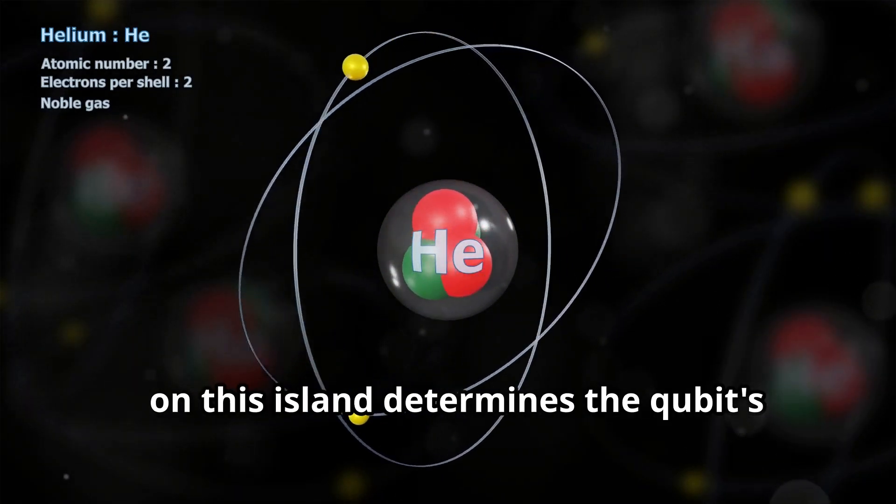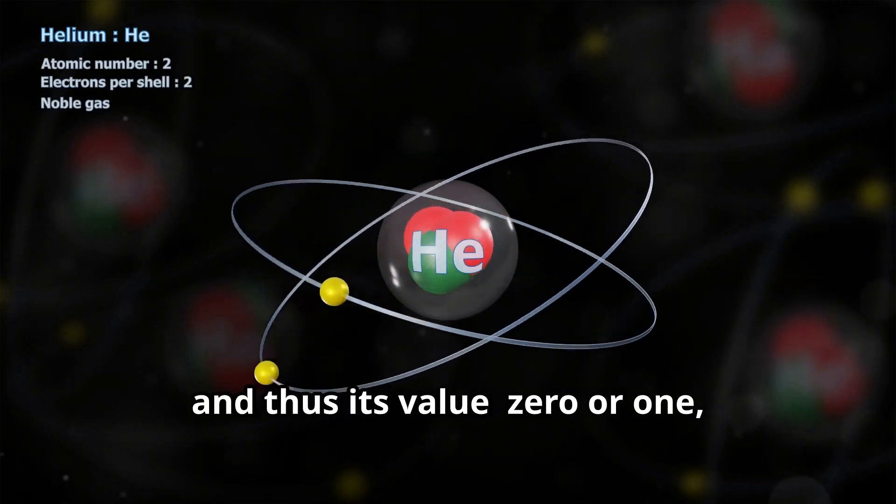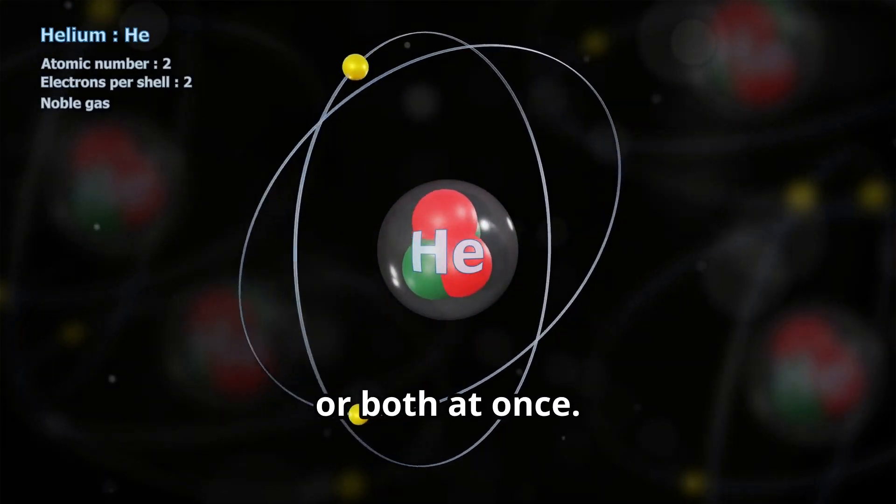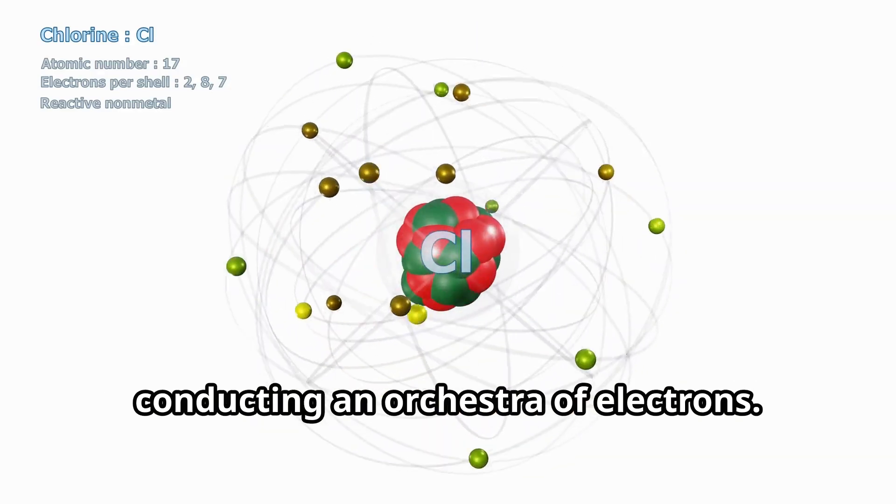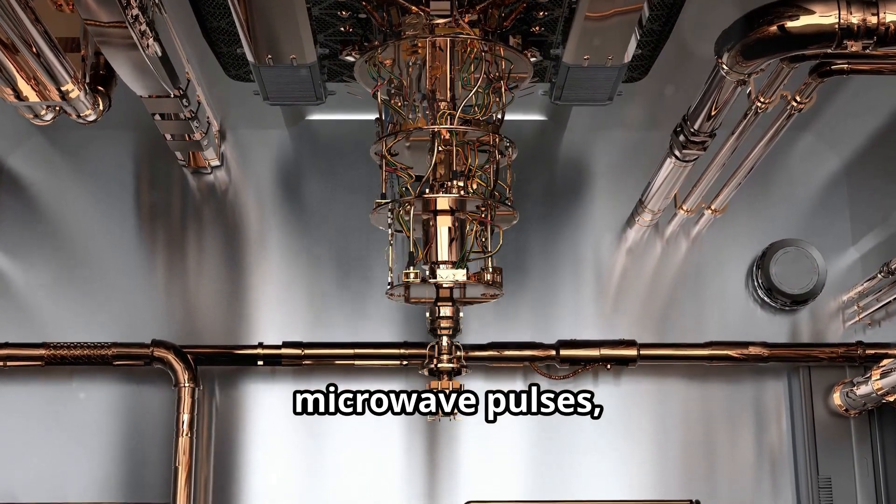The number of Cooper pairs - electrons that pair up in the superconducting state - on this island determines the qubit's energy state and thus its value: zero or one, or both at once. Controlling these transmon qubits is like conducting an orchestra of electrons.